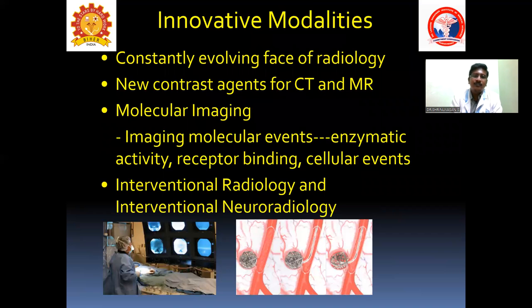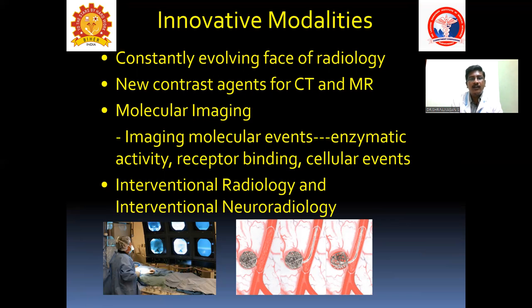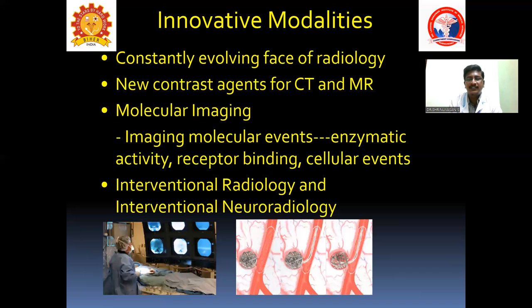Other innovative imaging modalities include cathlab procedures, used for both diagnostic and therapeutic purposes. Access is obtained via femoral sheath catheter, and the catheter is navigated to the site of occlusion, aneurysm, or AV malformation. Life-saving procedures such as embolization and coiling can be performed. There are two types: uniplanar and multiplanar cathlab machines. These are exclusively used for vascular pathologies, and all sorts of therapeutic procedures can be done using these machines.